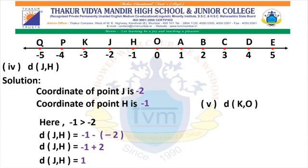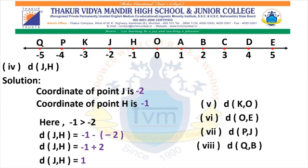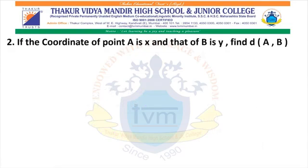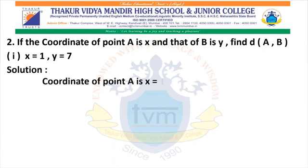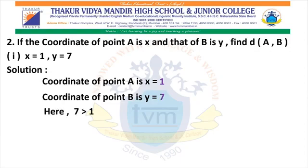Similarly, you can solve question numbers 5, 6, 7, and 8. Now, here we have question number 2. If the coordinate of point A is X and that of B is Y, find distance between A and B. For the first part, X equals 1 and Y equals 7. X is the coordinate of A, so coordinate of A is 1. Y is the coordinate of B, so coordinate of B is 7. 7 is greater than 1. Therefore, distance AB equals 7 minus 1. Therefore, distance AB equals 6.